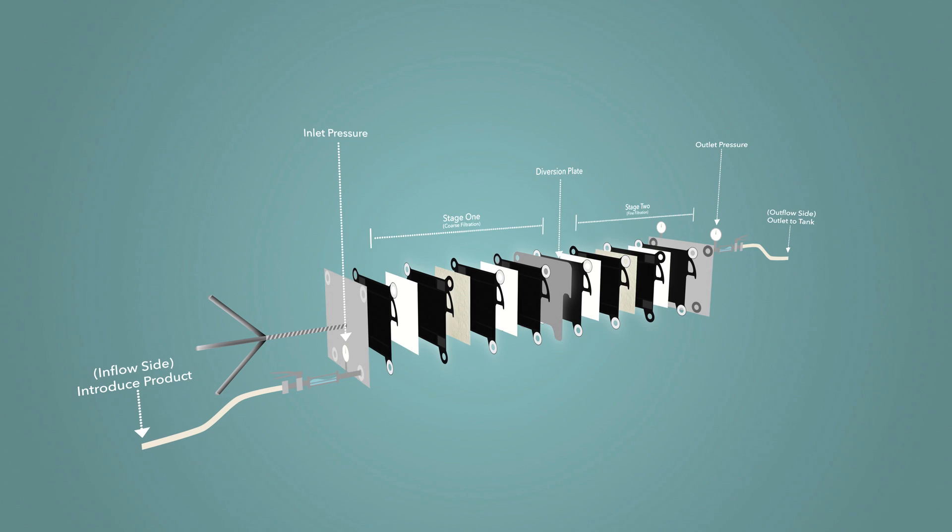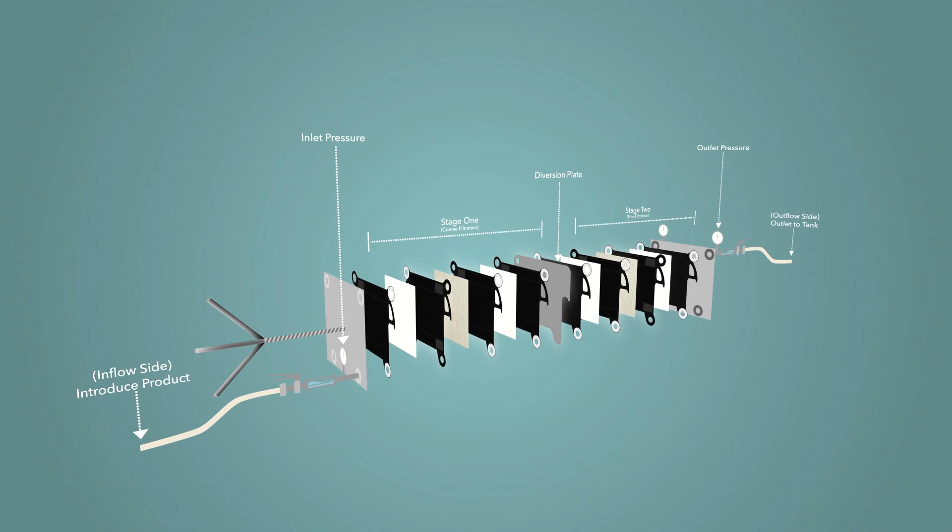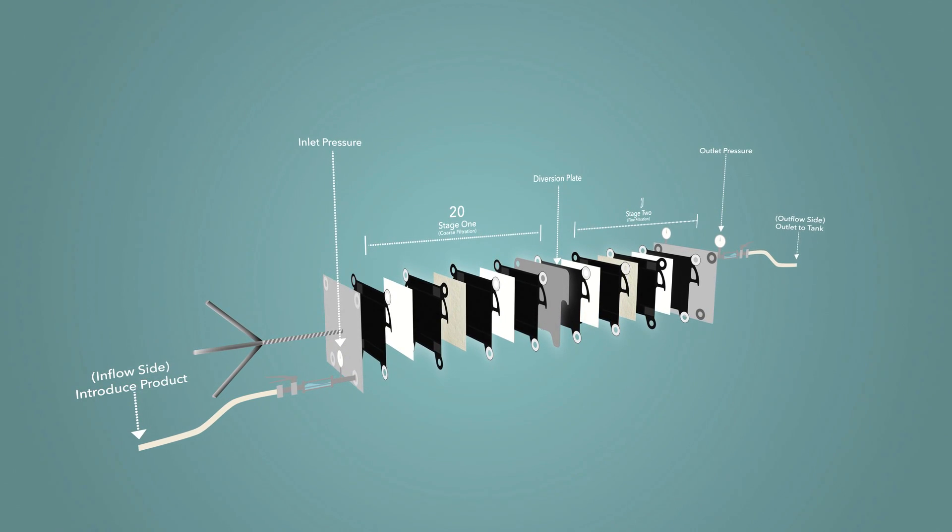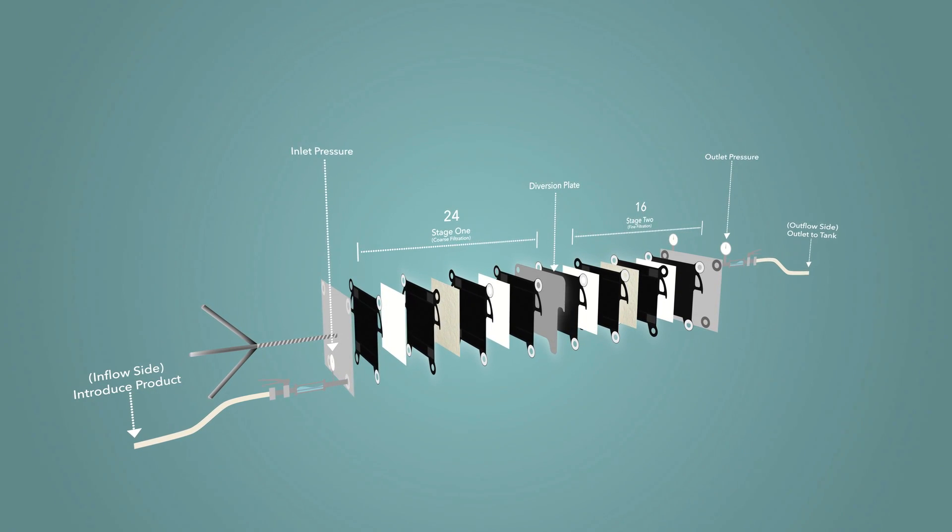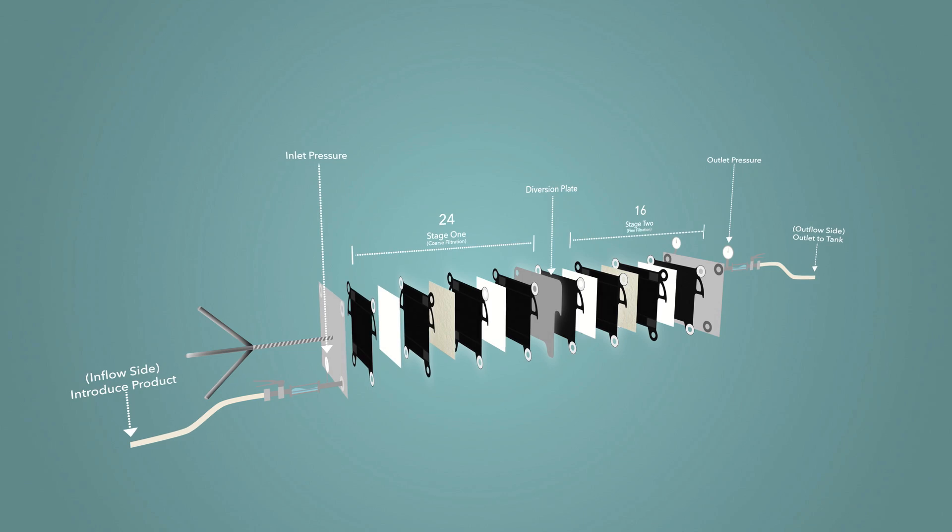For example, in a 40-plate filter, the stages can be broken up half and half, 20 plates on each side, or 24 to 16 to add capacity to one stage or the other.